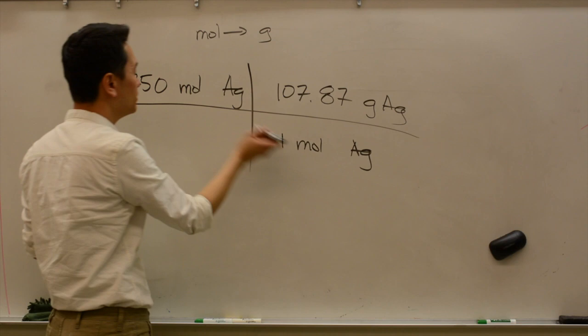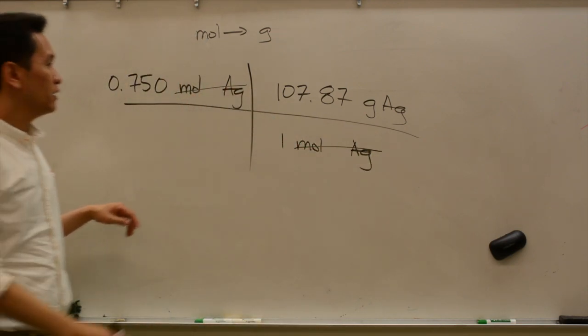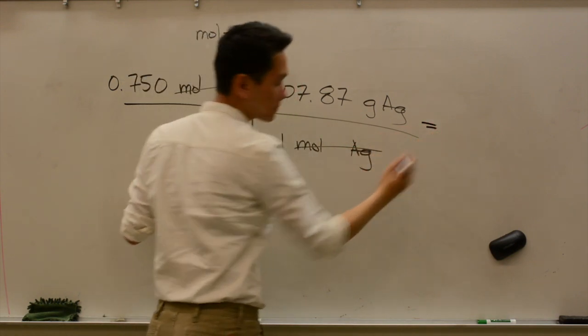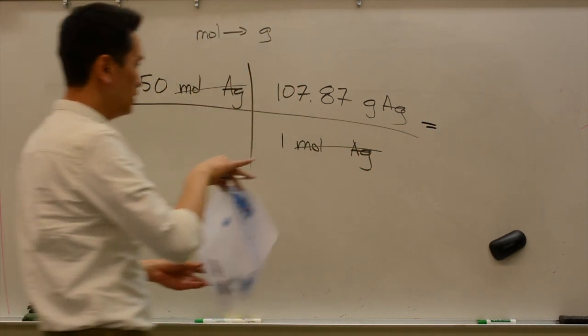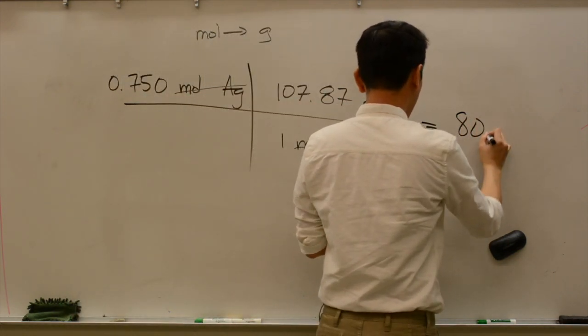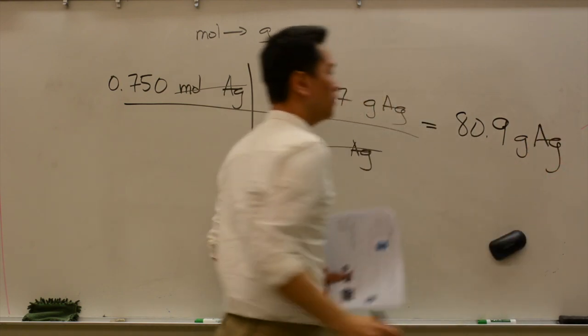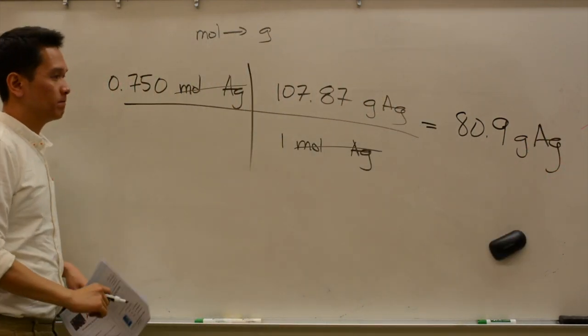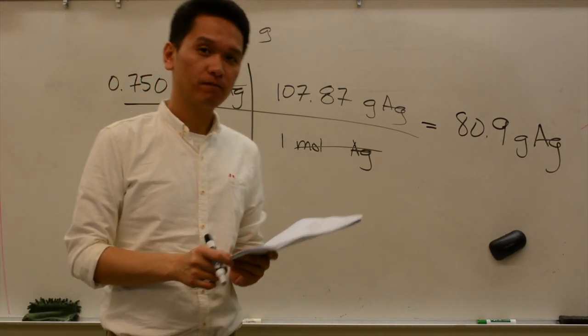We put the moles on the bottom so that moles and moles of the silver can cancel out. So we do that, and you should get this to be 80.9 grams of silver. See if you can do that in your calculator and get the same number.